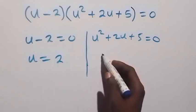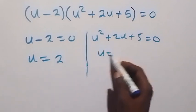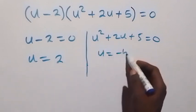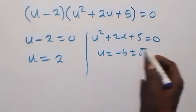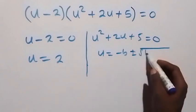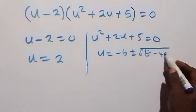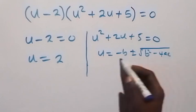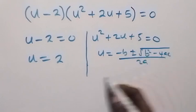For the second case, we can use the quadratic formula: u equals to minus b plus or minus square root of b squared minus 4ac over 2a. Here, u becomes minus 2 plus or minus square root of 2 squared minus 4 times 1 times 5, over 2 times 1.